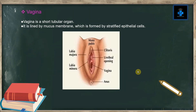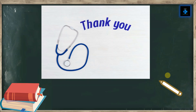The vagina is a short tubular organ lined by a mucous membrane formed by stratified epithelial cells. In this view we can appreciate the labia majora, the labia minora, the vagina, the clitoris, and the urethral opening. Hope you have understood the video — like, subscribe, and press the bell button for more videos. Thank you for watching.